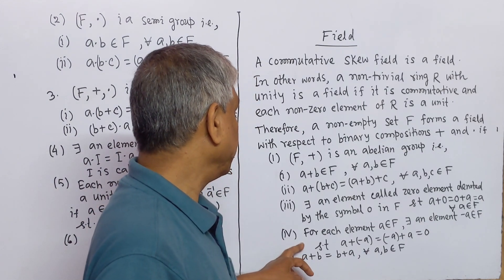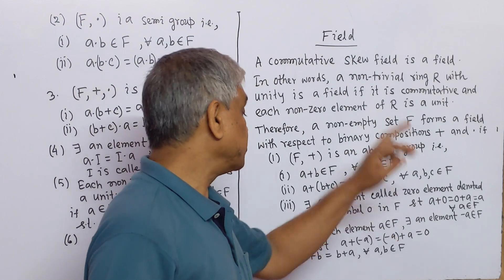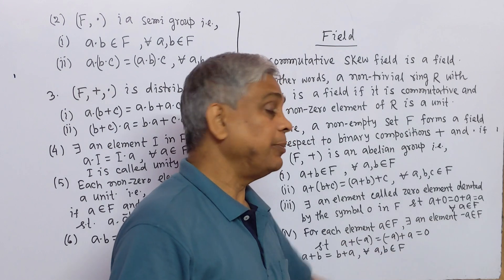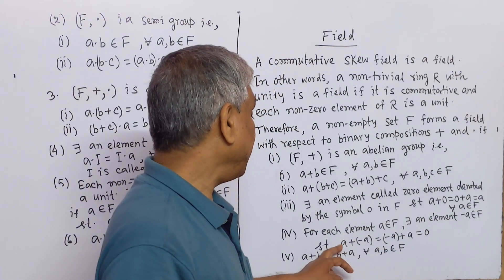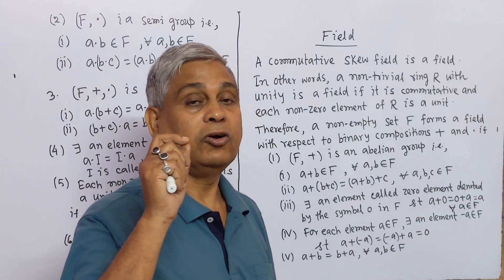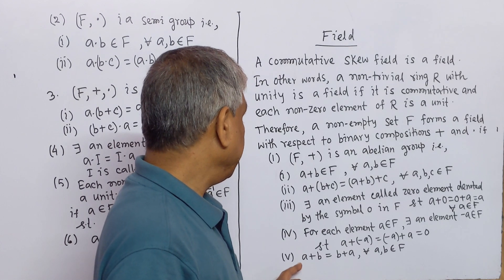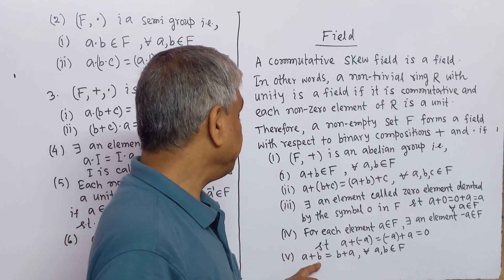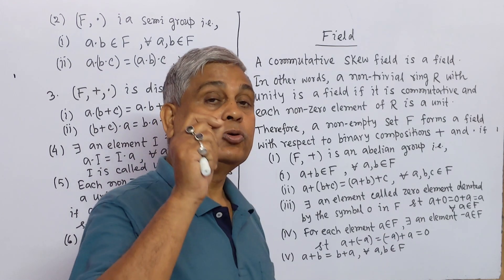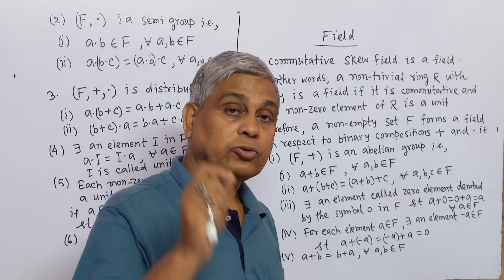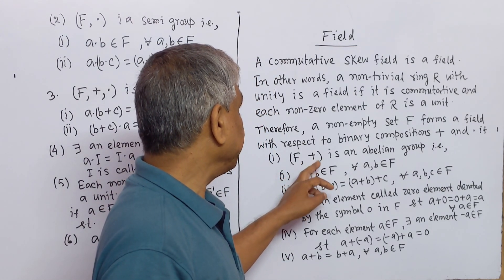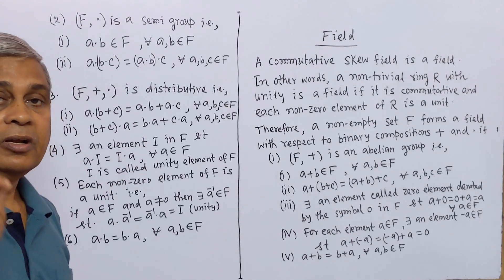Number 4: For each element a in F, there exists an element −a in F such that a + (−a) = (−a) + a = 0. Number 5: a + b = b + a for all a, b in F. This shows F with binary composition addition is an abelian group.